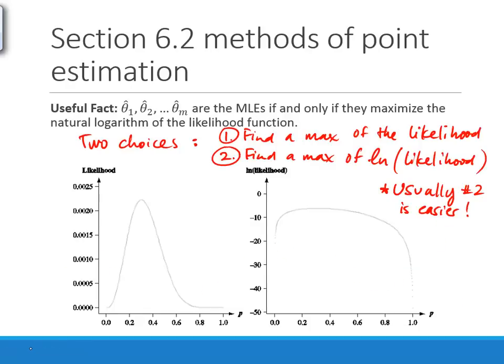A very helpful fact for doing this in practice: the same parameter values that maximize the likelihood function also maximize the natural log of the likelihood. Since natural log is a monotone function, it preserves maximum values. It's often much easier to find the maximum of the natural log of the likelihood rather than the likelihood itself — both give the same answer.